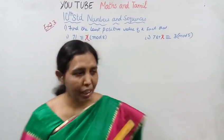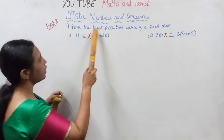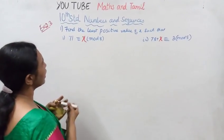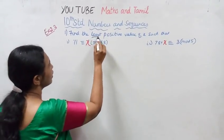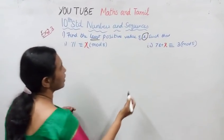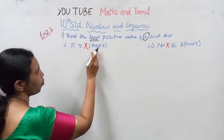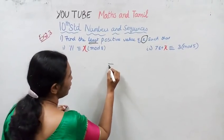First sum: find the least positive value of x such that 71 congruent x mod 8.